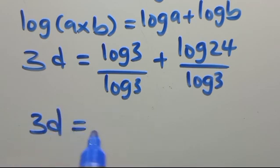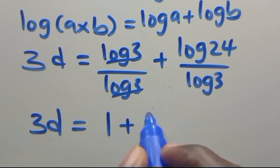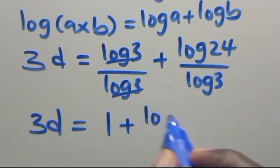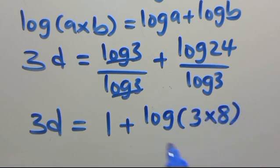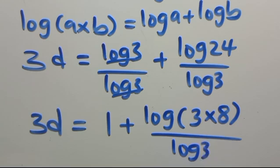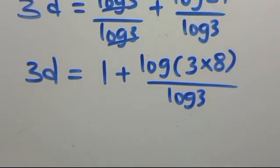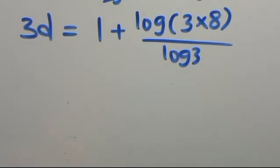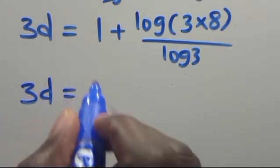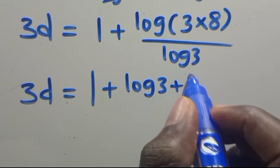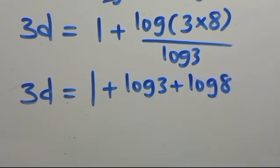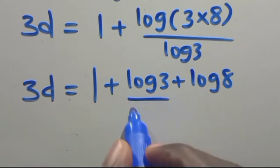So 3D equals 1 plus log 24 over log 3. We can also write log 24 as log of 3 times 8 over log 3, which gives 3D equals 1 plus log 3 plus log 8 all over log 3.